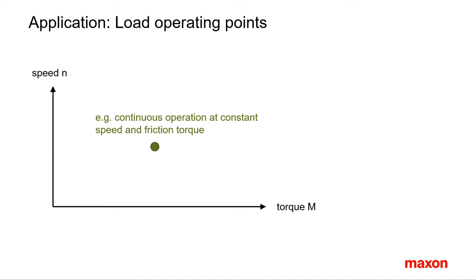The starting point for motor selection is the motion of the load in the application. The necessary operation cycles, speed profiles and friction result in speed and torque requirements the motor has to fulfill. In case of mechanical transformation — think of gears and screws — the values at the load have to be converted to the motor output shaft. In our standard diagram with motor speed as a function of torque, this can be represented as points of operation.